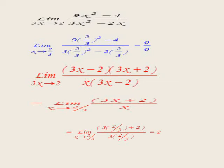Another example: limit as x approaches 2/3 of (9x² minus 4) over (3x² minus 2x). Substitution gives 0 over 0. Factorize the numerator: 9x² minus 4 equals (3x minus 2)(3x plus 2). Factorize the denominator: take x as common factor giving x(3x minus 2). Cancel (3x minus 2). The remainder is (3x plus 2) over x. Since x approaches 2/3, substituting: 3 times (2/3) plus 2 over (2/3) equals (2 plus 2) over (2/3) equals 4 over (2/3) equals 6.